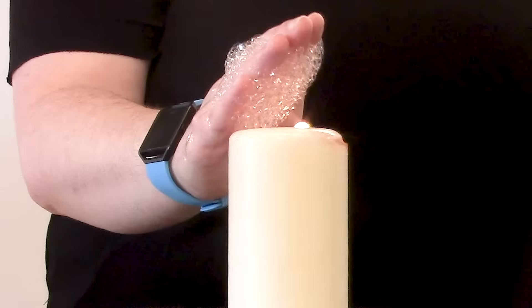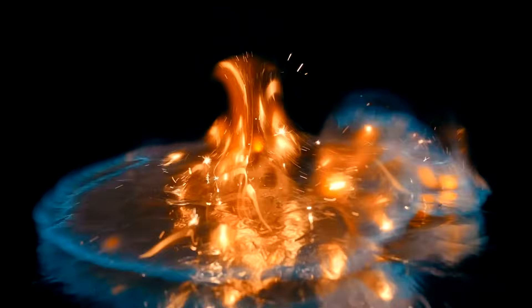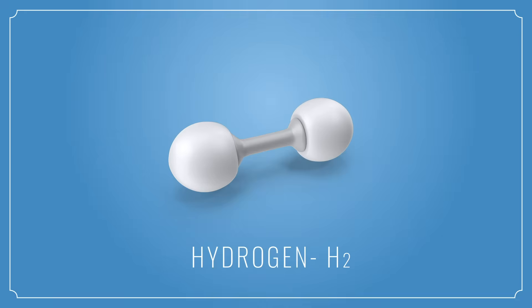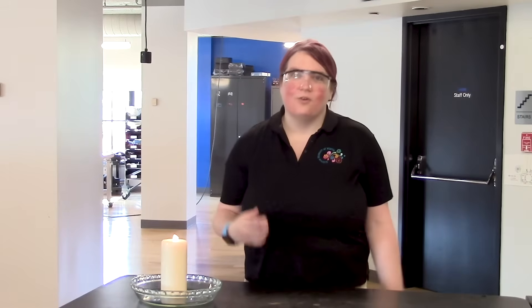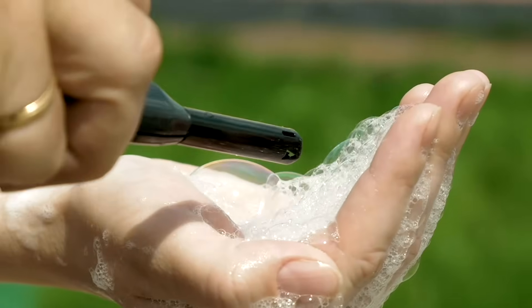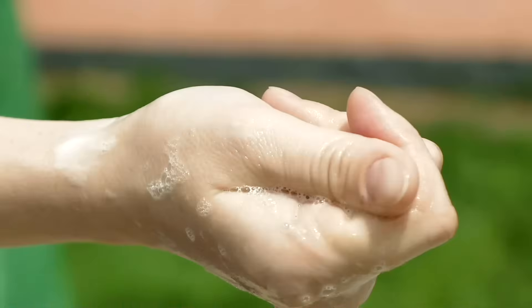Did you hear the pop? Did you see the little bit of flame that formed? Those are more signs that a chemical reaction occurred. We call this one combustion — it's when things react with oxygen in the presence of heat. In this case, my hydrogen (H2) reacted with the oxygen in the air (O2) to form water vapor, better known as H2O. So why is my hand okay? The secret is I coated it in water first. Water is capable of absorbing large amounts of heat, so the thin layer on the outside of my hand absorbed the heat from this reaction and kept me safe.